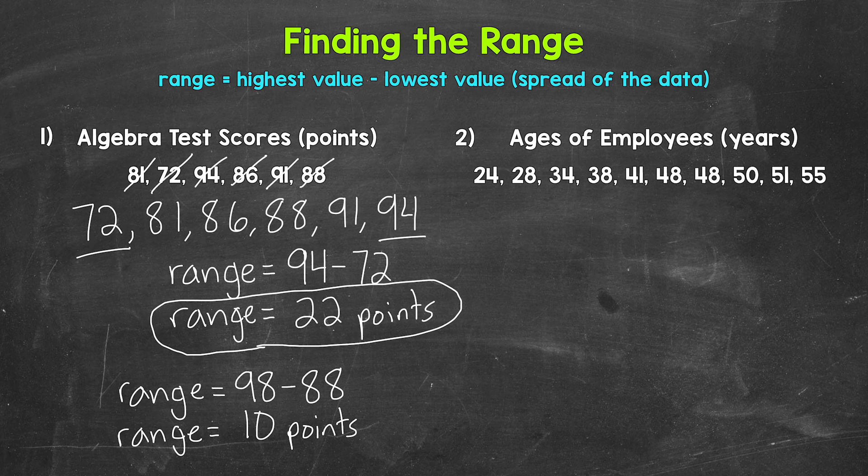Let's move on to number two, where we have the ages of employees. So let's say that we have the ages of the employees at a small business. Let's find the range. Now, these ages are already in order from least to greatest. So let's find the highest value and lowest value. The highest value is 55. The lowest value is 24. So the oldest person is 55 years old and the youngest person is 24 years old. Let's find the range.